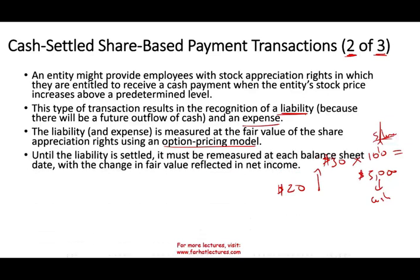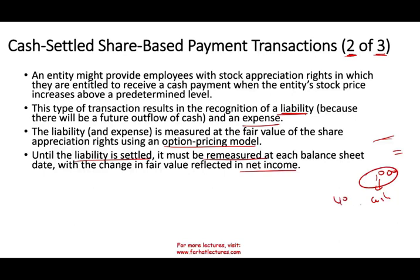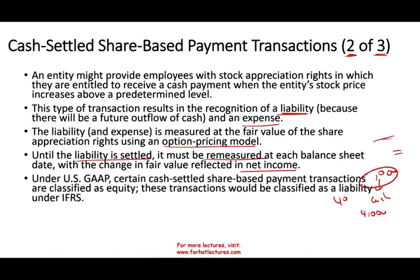Under US GAAP, until the liability is settled, it must be re-measured at each balance sheet date with the change reflected in net income. So if the stock price moves from $30 to $40, the liability increases and we record additional expense. Under US GAAP, certain cash-settled share-based transactions are classified as equity. However, these transactions must be classified as a liability under IFRS — that's a key difference.